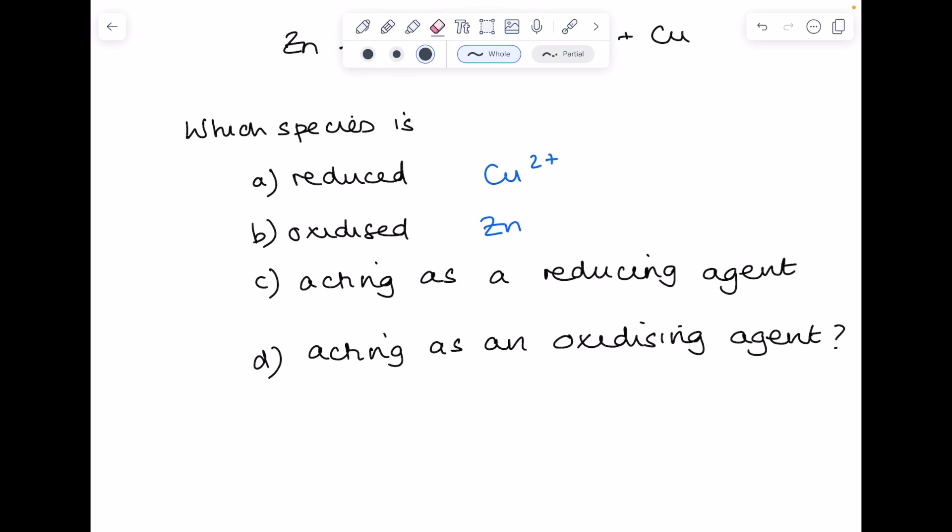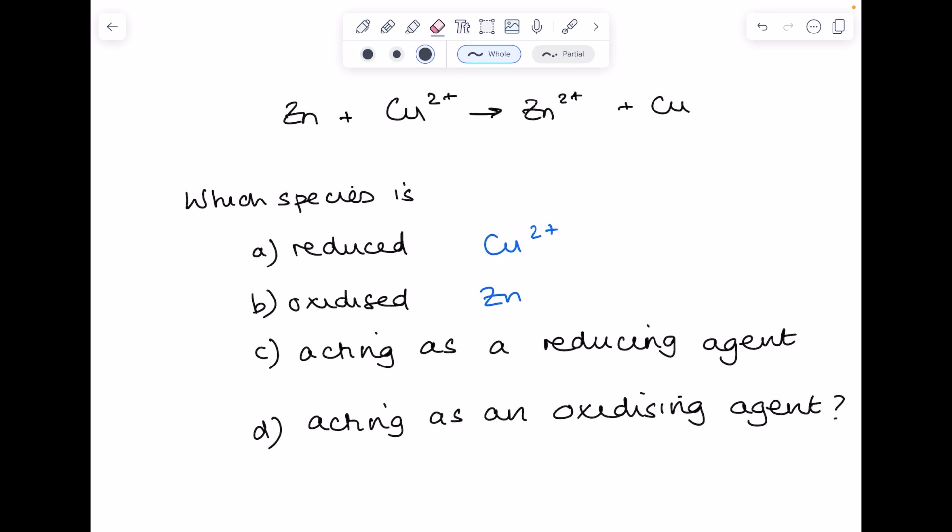Which species is acting as a reducing agent? Remind yourself of the definition. A reducing agent is a substance which causes another substance to be reduced. So the substance being reduced is the copper, because remember, it gains two electrons. So what's causing that copper to be reduced, to gain two electrons? It is the zinc.